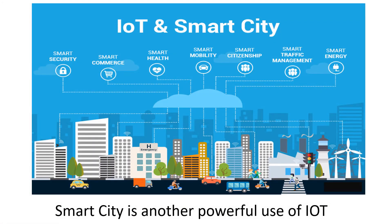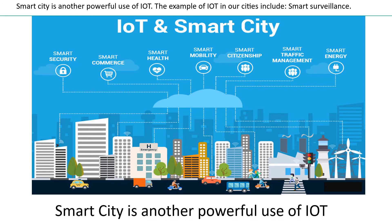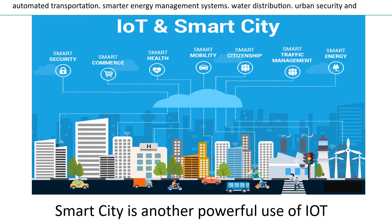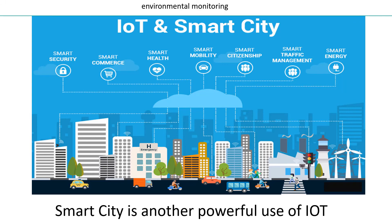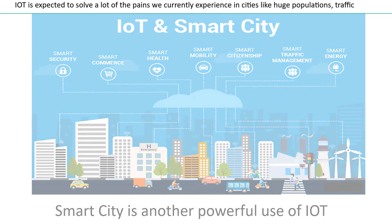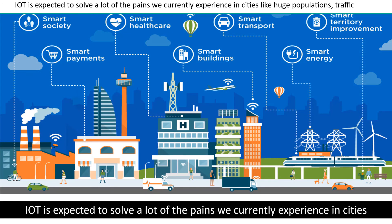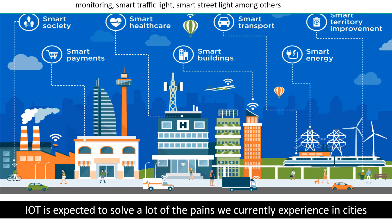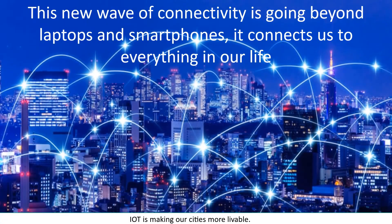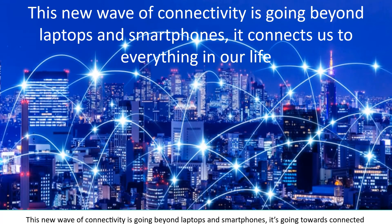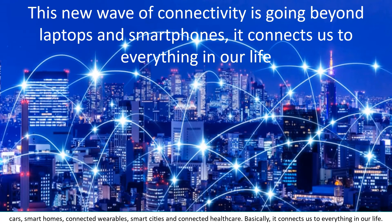Smart Cities is another powerful use of IoT. Examples of IoT in our cities include Smart Surveillance, Automated Transportation, Smarter Energy Management Systems, Water Distribution, Urban Security, and Environmental Monitoring. IoT is expected to solve a lot of the pains we currently experience in cities like huge populations, traffic congestion, energy load shedding, waste management, emergency management, river level monitoring, smart traffic lights, and smart street lights among others. IoT is making our cities more livable. This new wave of connectivity is going beyond laptops and smartphones — towards connected cars, smart homes, connected wearables, smart cities, and connected healthcare. Basically, it connects us to everything in our life.